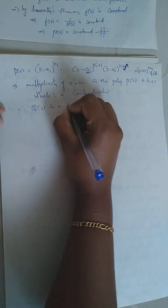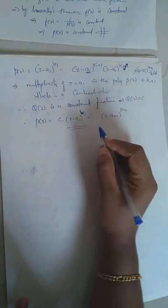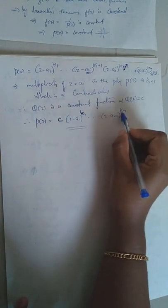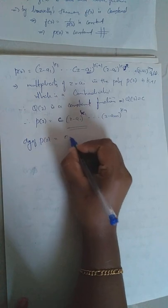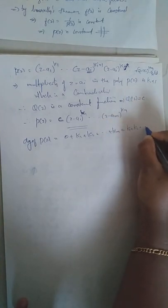Therefore Q(z) must be constant. Setting Q(z) = C, P(z) has the exact form C·(z - a1)^k1·...·(z - am)^km. The degree of the constant function is 0, so the degree of P(z) equals k1 + k2 + ... + km, which is exactly the sum of the multiplicities.